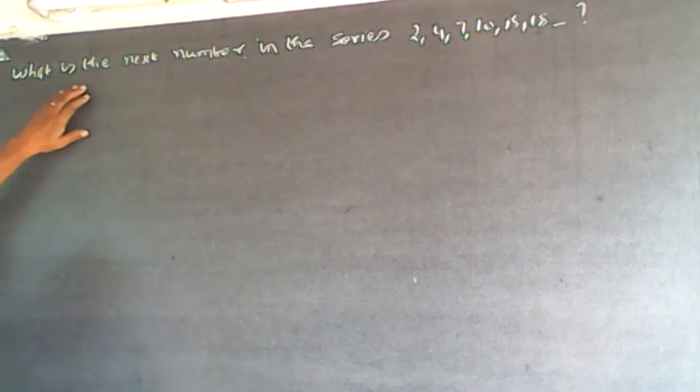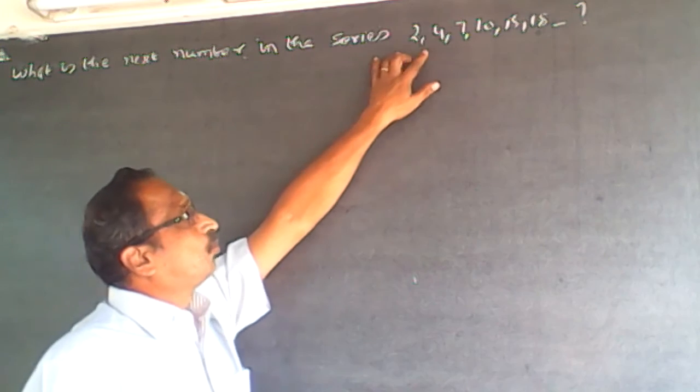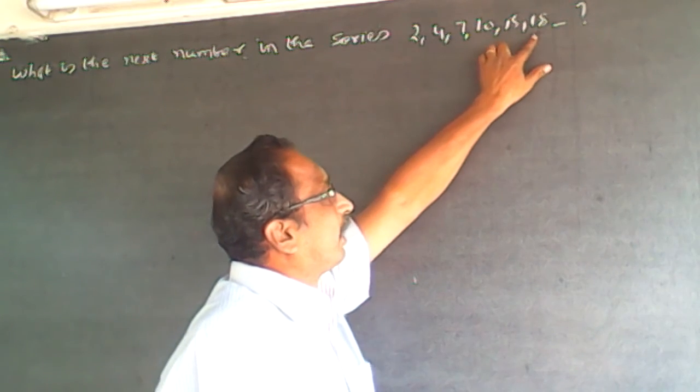The question is, what is the next number in the series 2, 4, 7, 10, 15, 18?